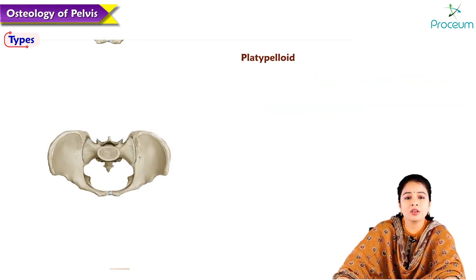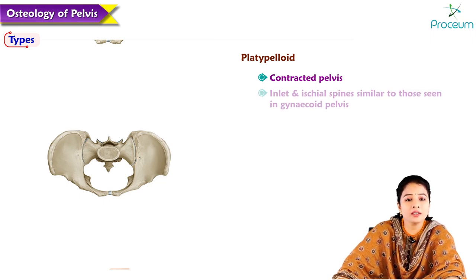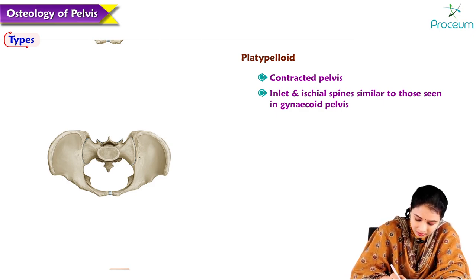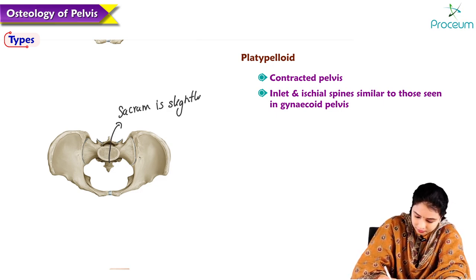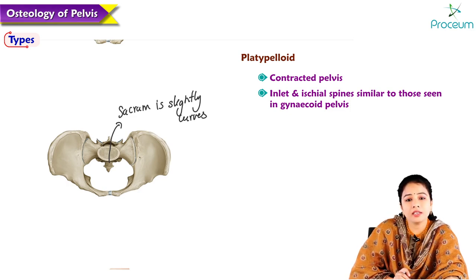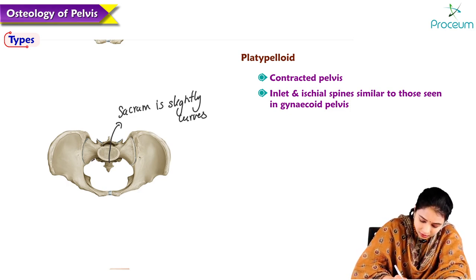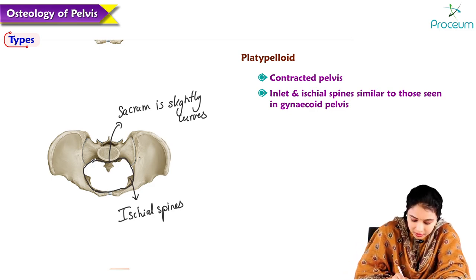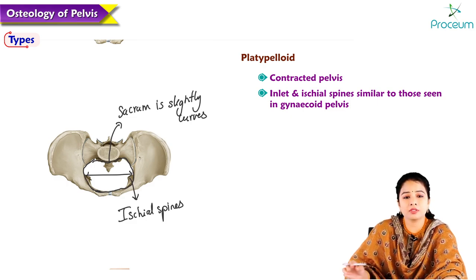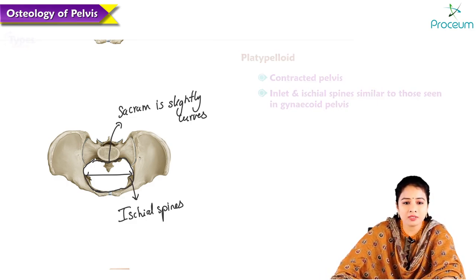The platypelloid pelvis, also called the contracted pelvis, has an inlet and ischial spines similar to those of the gynecoid pelvis, with blunt ischial spines. However, the sacrum is slightly curved, and the transverse diameter is greater compared to the anteroposterior diameter.